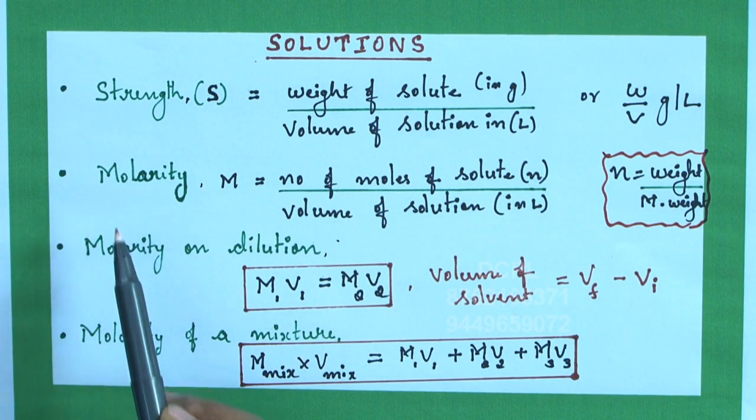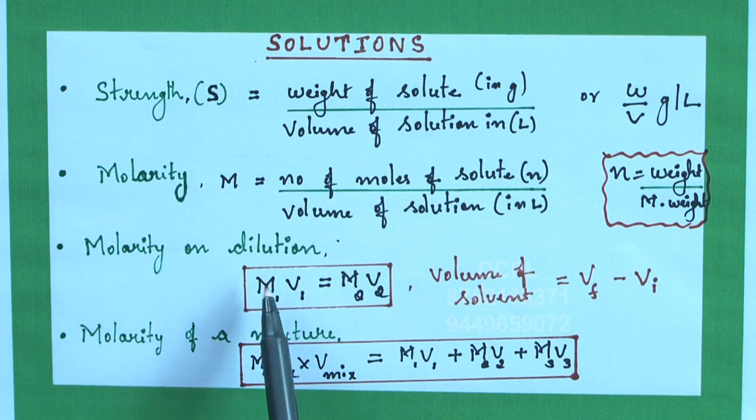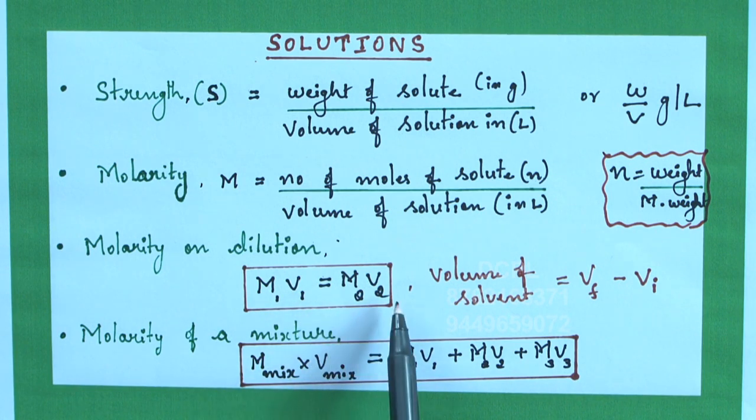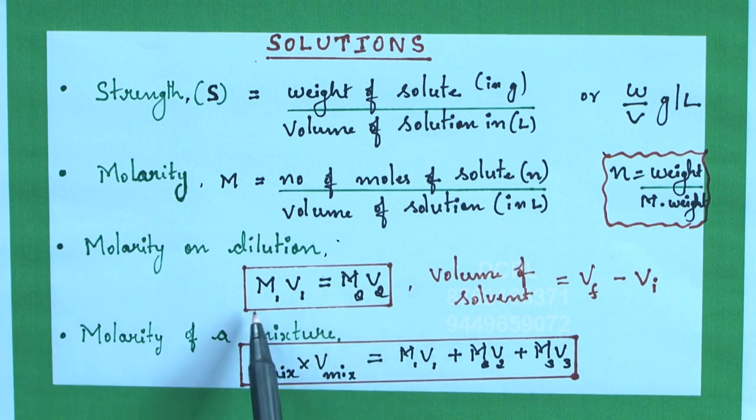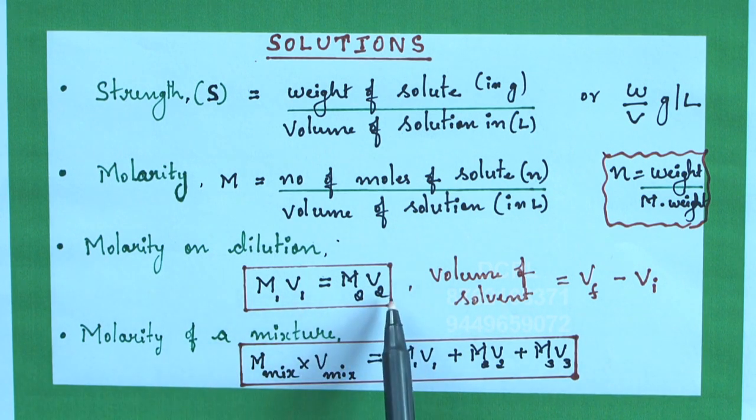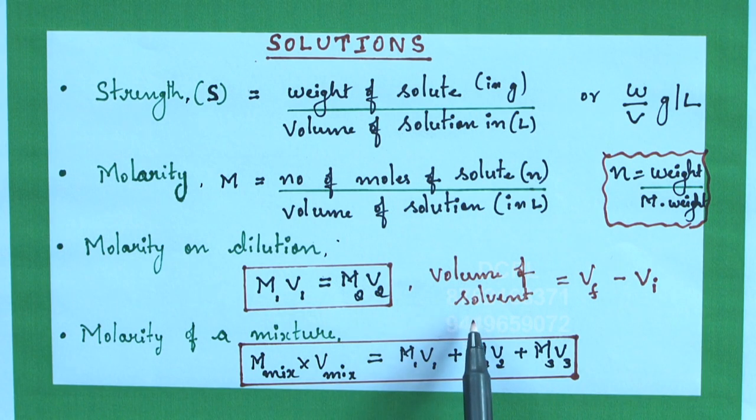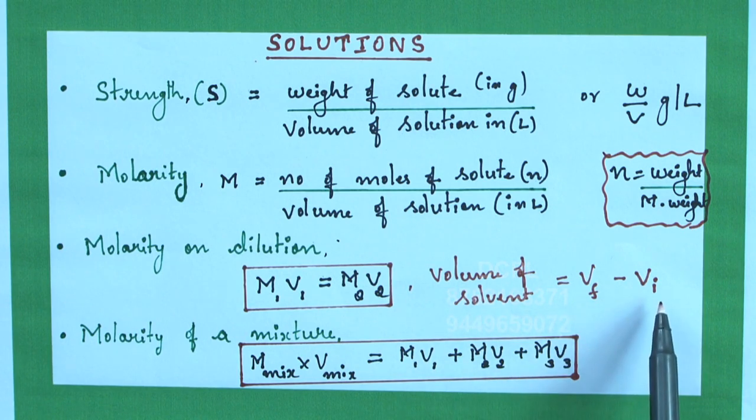When there is a dilution, then molarity on dilution is given as M1V1 equals M2V2, where M1 and M2 represent initial and final molarity, whereas V1 and V2 represent initial and final volume. If we have to find out the volume of solvent added, then we have to just calculate V final minus V initial or V2 minus V1.